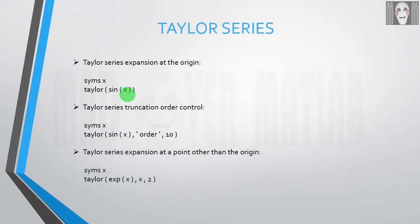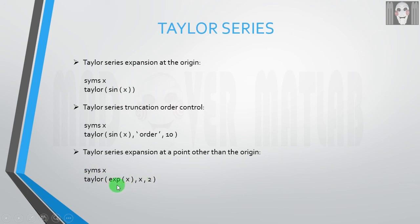After this, let us discuss how to expand a function using Taylor series at a point other than the origin. First you have to declare the variable as a symbol. After that, use the taylor keyword, then the parenthesis, then the function, and then you have to write the variable x followed by the point around which you want to expand the Taylor series.